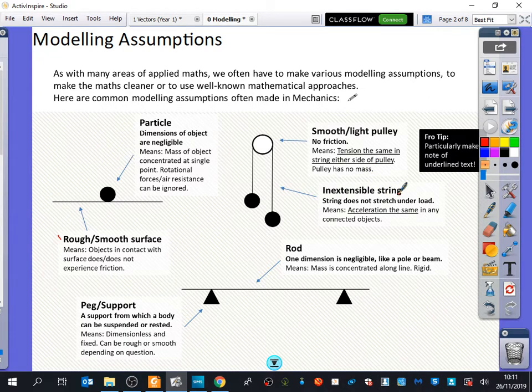The inextensible string, it might explain in the question that two particles are connected by an inextensible string. What do we think the word inextensible means? What does it sound like it means? Like it sounds like it doesn't stretch. It just means that it doesn't stretch. A bit like the lanyards you're wearing around your neck. They're not made of elastic that are like really springy and stretchy. And what this means, it says the string does not stretch under a load. And it means that the acceleration is the same in any connected objects. If this object here is going to accelerate downwards, this one here is going to accelerate upwards and at exactly the same rate because the string is not stretchy. Again, we will come across all of these in much more detail.